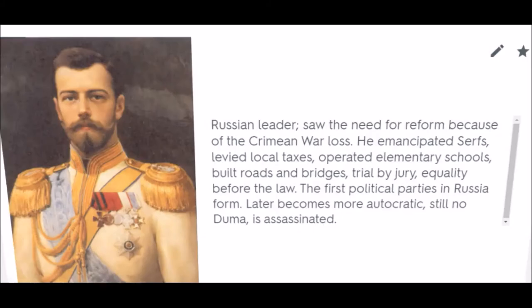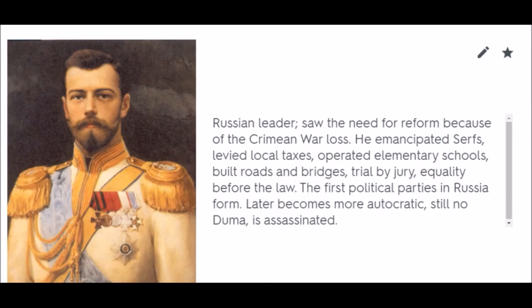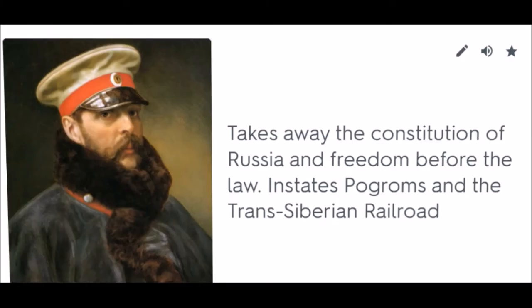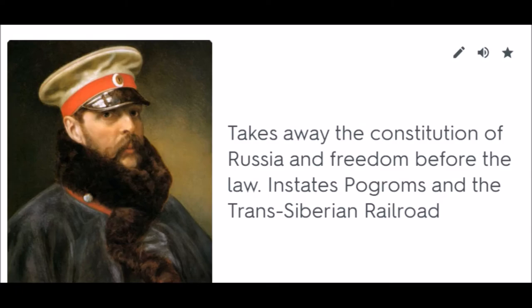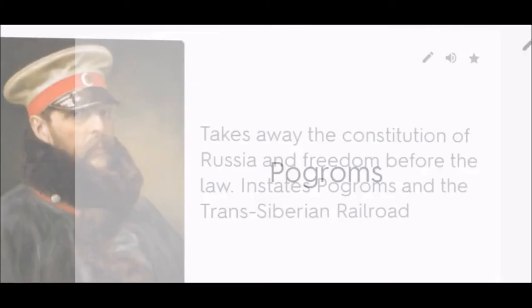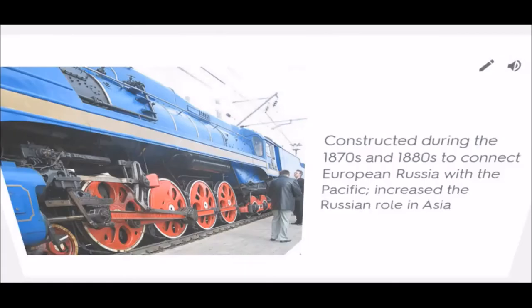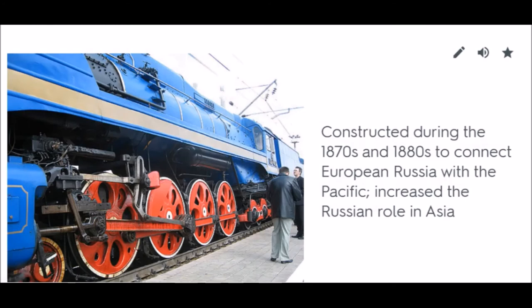Alexander II. Zemstvos: A form of local government instituted during the great Liberal reforms in Imperial Russia by Alexander II. Alexander III: Takes away the constitution of Russia and freedom before the law, institutes pogroms and the Trans-Siberian Railroad. Pogroms: Government-supported attacks against Jews in Russia. Trans-Siberian Railroad: Constructed during the 1870s and 1880s to connect European Russia with the Pacific, which increased the Russian role in Asia.